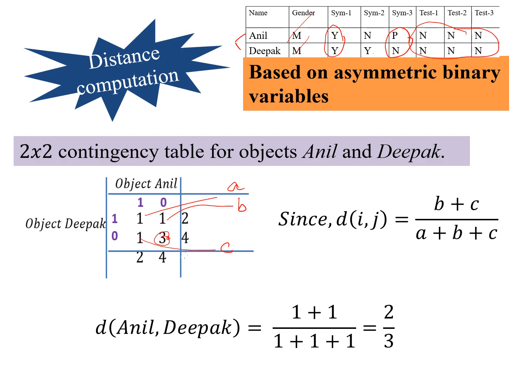So the distance we compute as 1 plus 1, b plus c, and a plus b plus c is 2 by 3. Considering the asymmetric binary variables, we compute the distance between two objects.